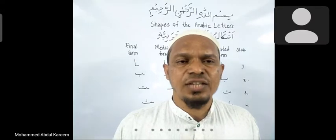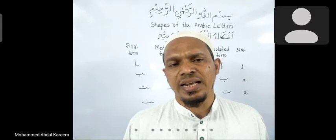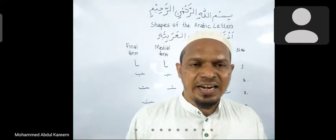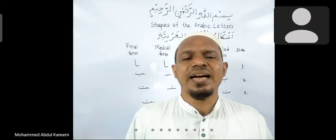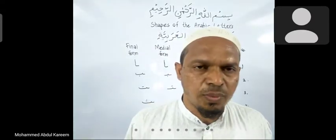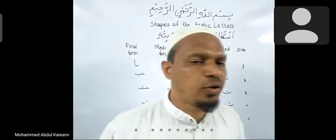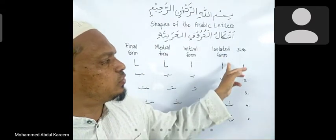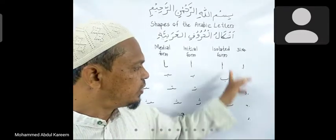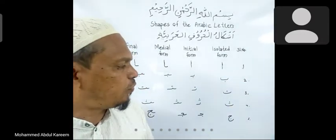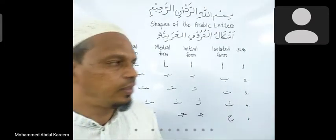What is isolated form? The isolated form of a letter is also known as the independent form. Letters are written separately and written in full, complete form. As you can observe here, this is the isolated form of the letters alif, ba, ta, sa, jim, and so on — the complete letter is written.